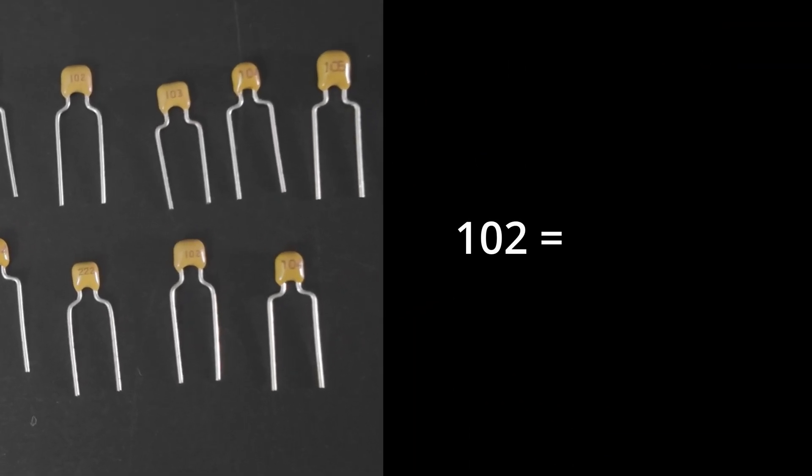102 means 10 followed by two zeros, so 1,000. But 1,000 what? Picofarads. But what we need is nanofarads, so multiply by a factor of a thousand. That means 102 signifies one nanofarad.